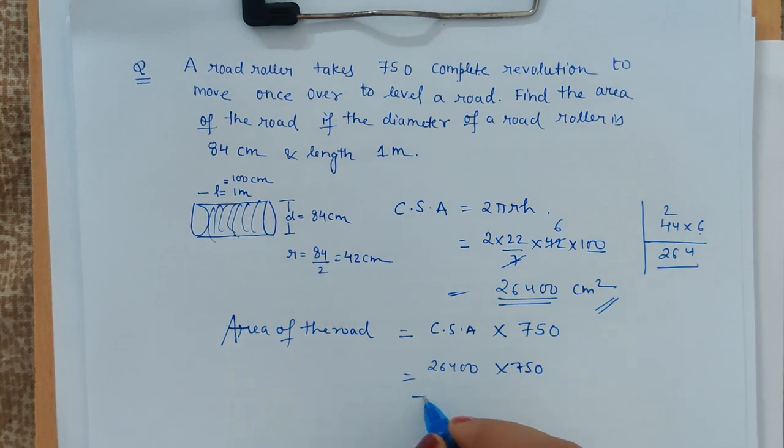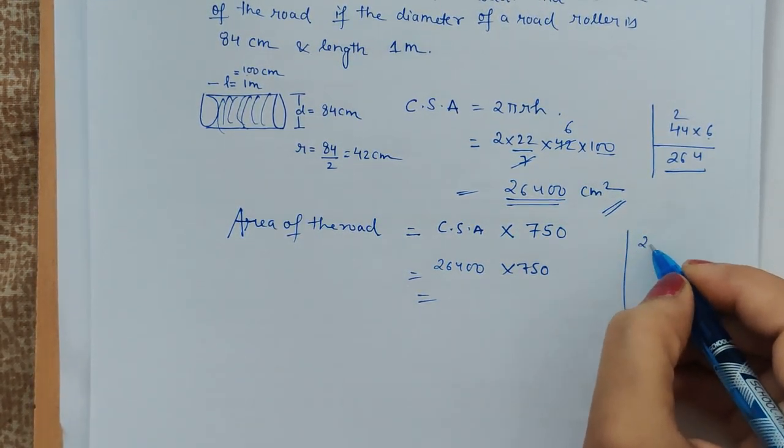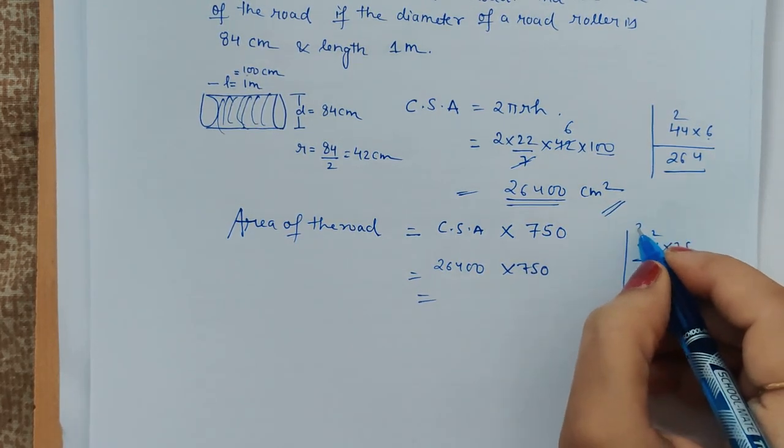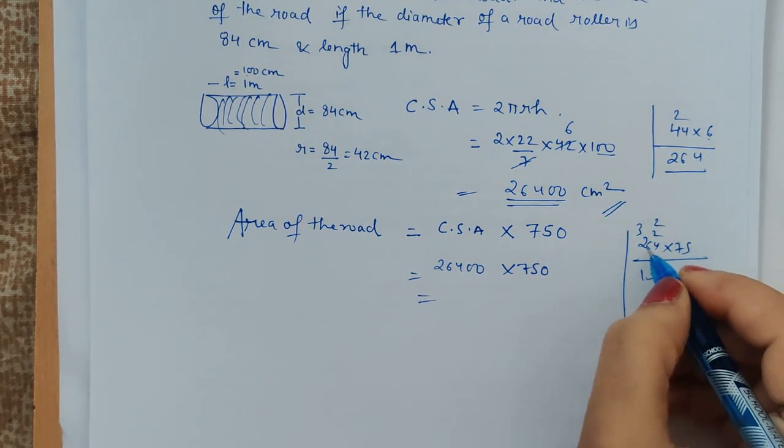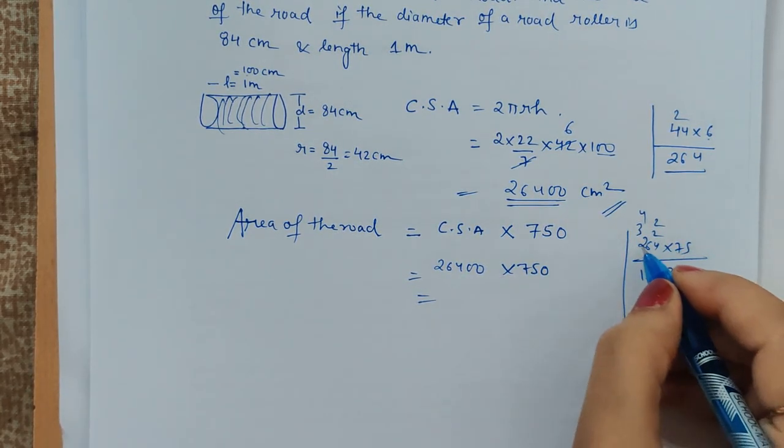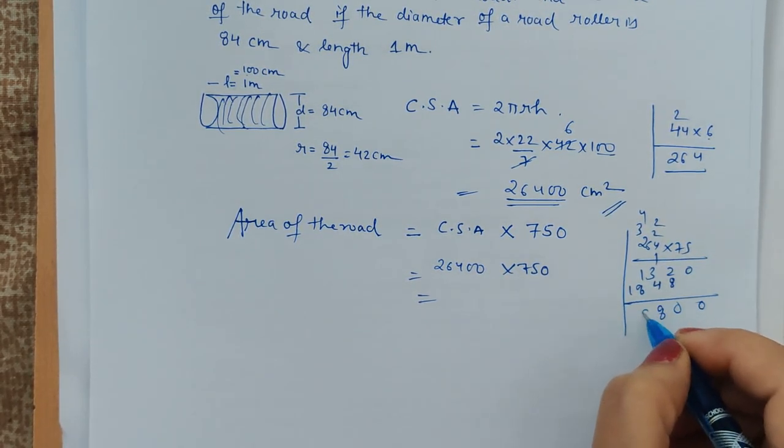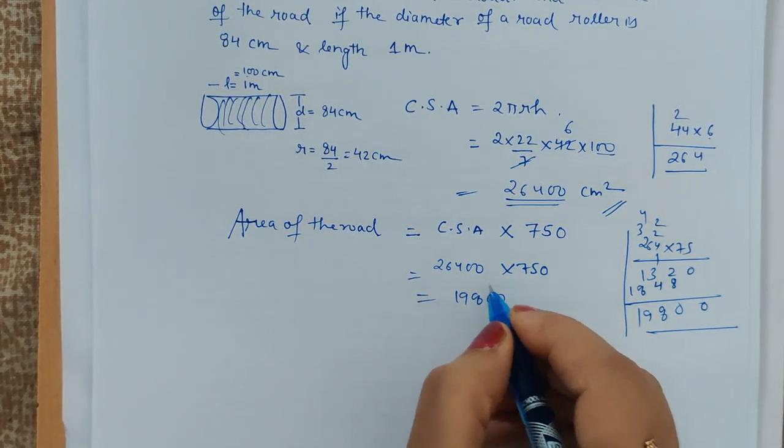So just multiply and get the solution. Here we are multiplying 264 into 75. 5 times 4 is 20, this is 32, that is 10, 13, 7 times 4 is 28, so this is 42, 44. This is 14 plus 4 is 18, 0, 10, 8, 1, 9, 8 double 0.